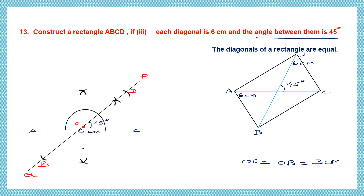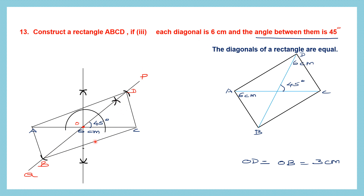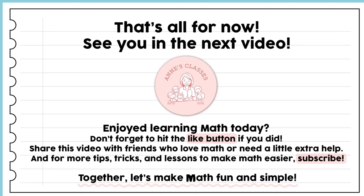Now let's join all the points. We can join AB, then BC, then CD and DA. So now we have our rectangle ABCD. We have 6 centimeters for one diagonal, this diagonal is also 6 centimeters, and the angle between them is 45 degrees. So ABCD is the required rectangle. We'll stop with that for now. In our next video we will continue with the remaining questions. Thank you, children.